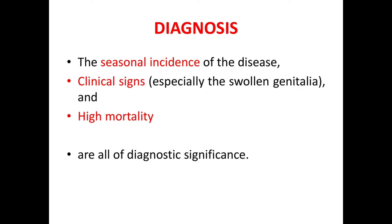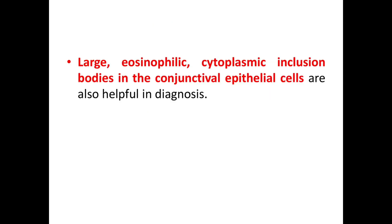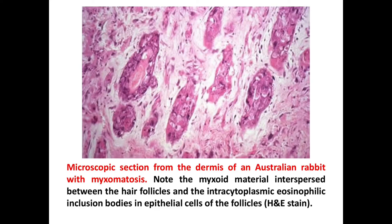Coming to the diagnosis: the seasonal incidence of the disease, the clinical signs, especially the swollen genitalia and high mortality, are all of diagnostic significance. Large eosinophilic cytoplasmic inclusion bodies in the conjunctival epithelial cells are also helpful in diagnosis. In histopathology you can see cytoplasmic inclusion bodies that are large and eosinophilic in the conjunctival epithelial cells. This is a microscopic section from the dermis of an Australian rabbit with myxomatosis — note the myxoid material interspersed between the hair follicles and the intracytoplasmic eosinophilic inclusion bodies.